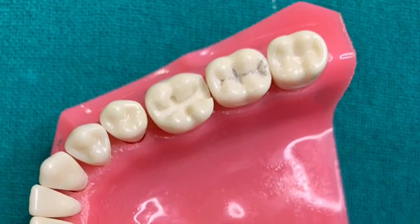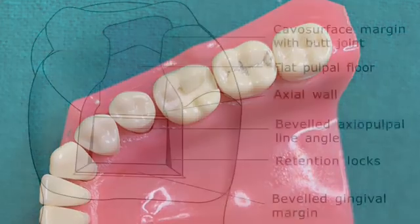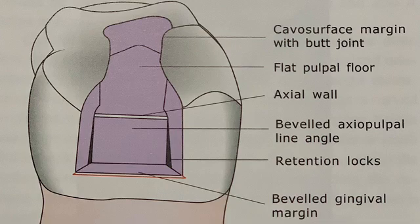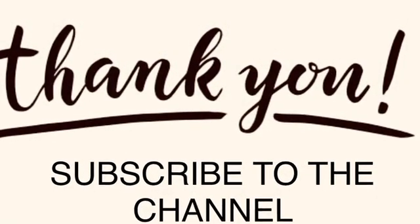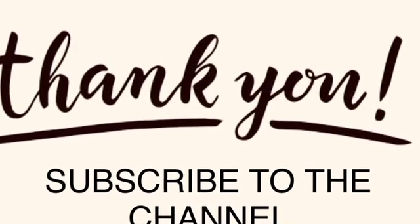This is a completed class 2 cavity preparation. In a nutshell, we have tried to make a preparation in which the cavosurface margin is a butt joint, the pulpal floor is flat, the axial wall is straight and parallel to the long axis of the tooth, the axiopulpal line angle is beveled or rounded, and the gingival margin is beveled and distinct. Practice makes perfect — do practice your class 2 cavities till you make a perfect one. Thank you.